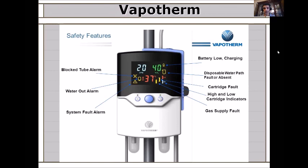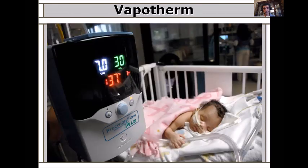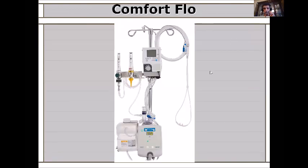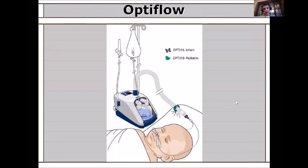The Vapotherm provides heat, humidification, and monitoring. The Comfort Flow has a humidifier, heater, oxygen source, medical air source, and control unit with corrugated tubing connected to prongs of different sizes. The OptiFlow works on the same principle and is smaller and more portable. These high flow devices are much better tolerated than face mask oxygen for extended use.